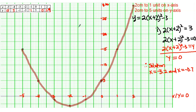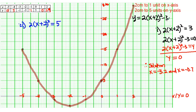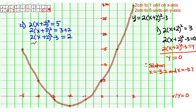Now for part ii, they want the solution set for 2(x + 2)² = 5. We compare it with our graph. We rewrite it as 2(x + 2)² - 3 = 5 - 3, which gives 2(x + 2)² - 3 = 2. Comparing with our graph y = 2(x + 2)² - 3, the line we need is y = 2.